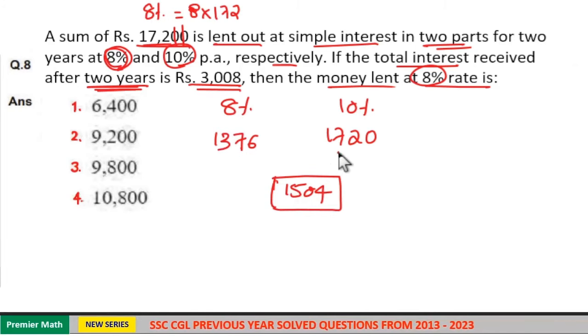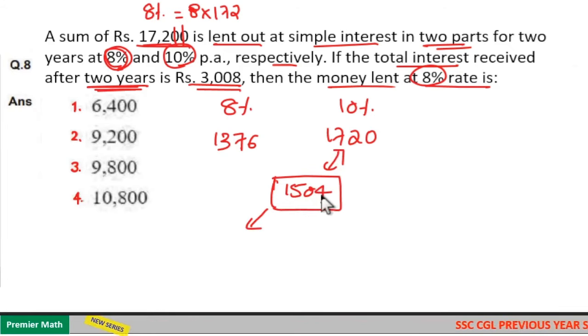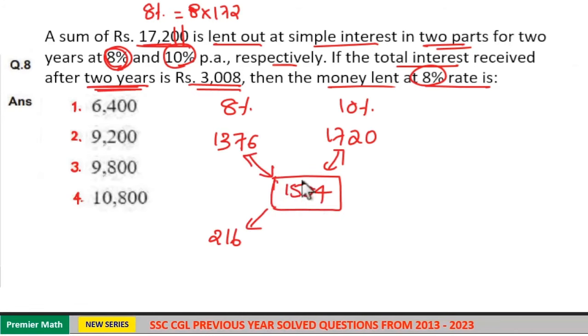Now use the allocation method. Difference between Rs. 1,720 and Rs. 1,504 is equal to Rs. 1,720 minus Rs. 1,500 is Rs. 220, minus Rs. 4 is Rs. 216. Now take the difference between Rs. 1,376 and Rs. 1,504. 14 minus 6 is 8, 13 minus 15 is negative 2. So 14 minus 13 is 1, giving us 128.